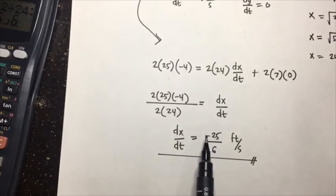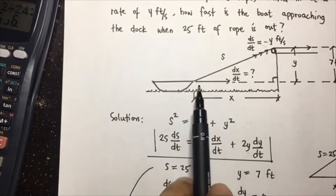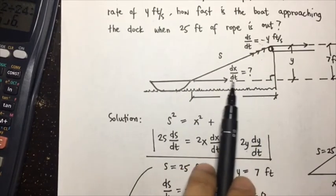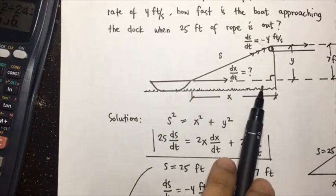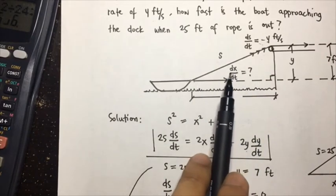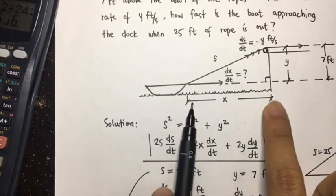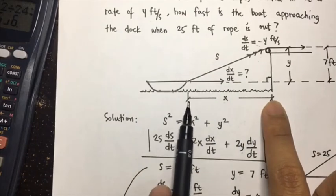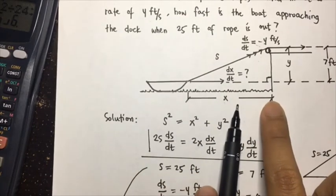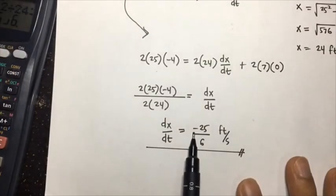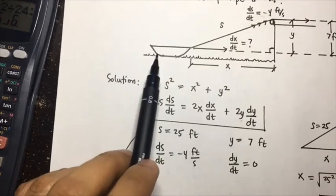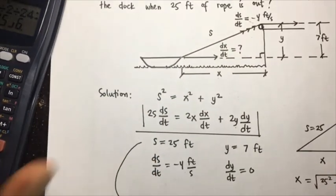The answer is negative, which makes sense because the boat is approaching the dock — x becomes smaller and smaller as the boat moves closer. Therefore the rate of change of x is negative, and this also corresponds to the velocity of the boat toward the dock.